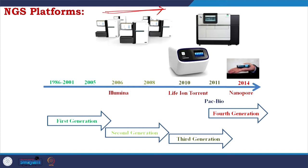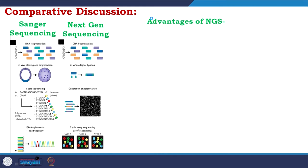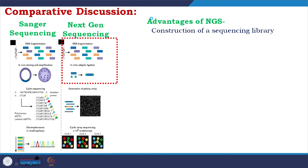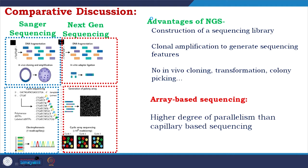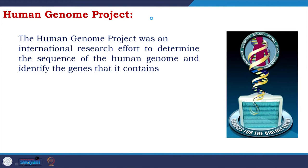The main platforms in the market now are Illumina, Life Ion Torrent, PacBio, and Nanopore. Comparing Sanger to NGS: NGS offers construction of a sequencing library, clonal amplification without in vivo cloning, transformation, or colony picking — all of which helps automation. Array-based sequencing provides a higher degree of parallelism than capillary-based sequencing. This journey from first-generation to next-generation sequencing pushed the community toward automation, culminating in the Human Genome Project, which again changed the direction and speed of biology.